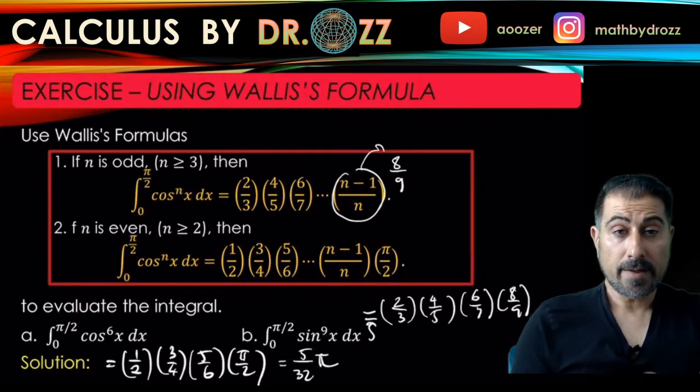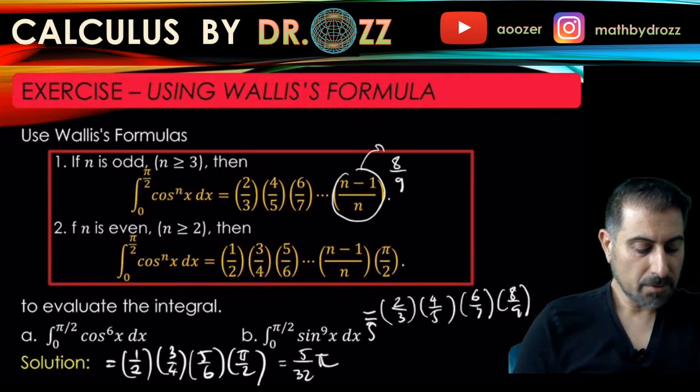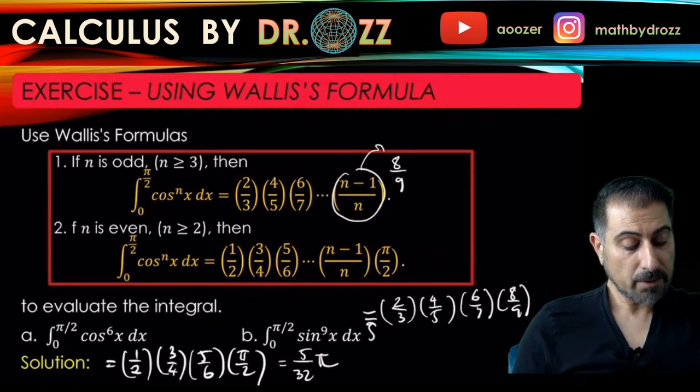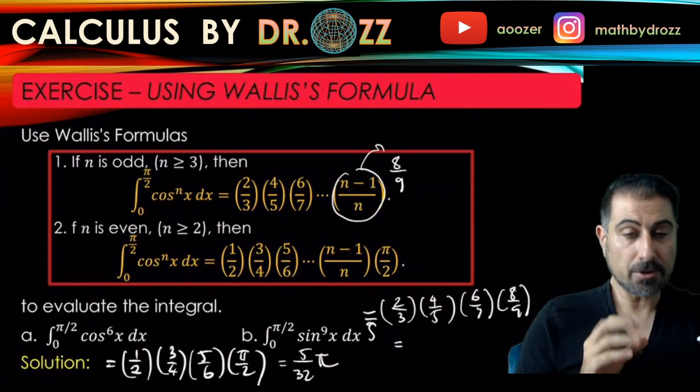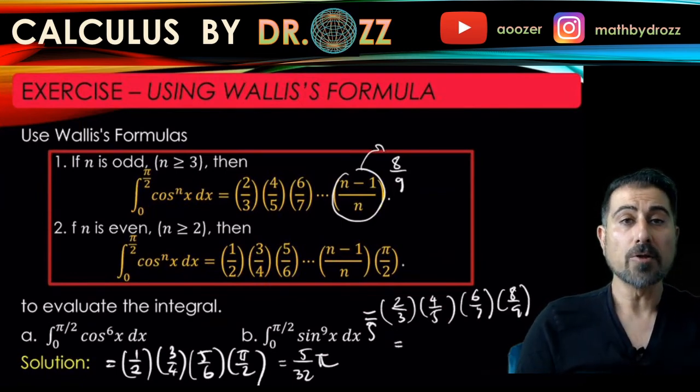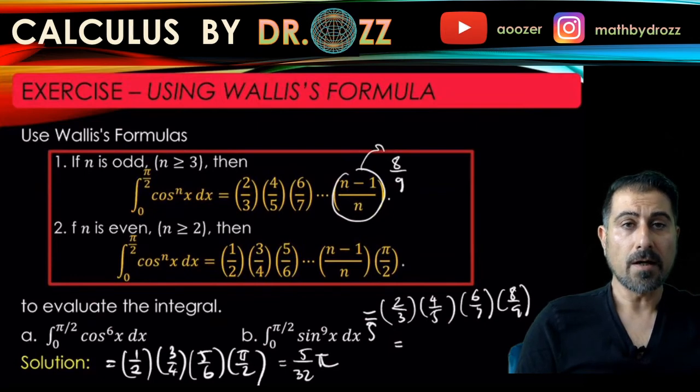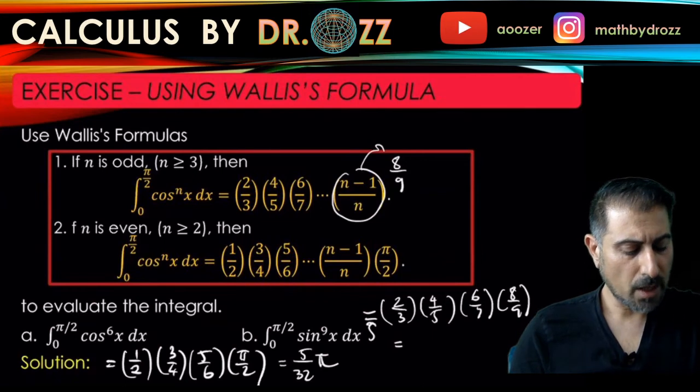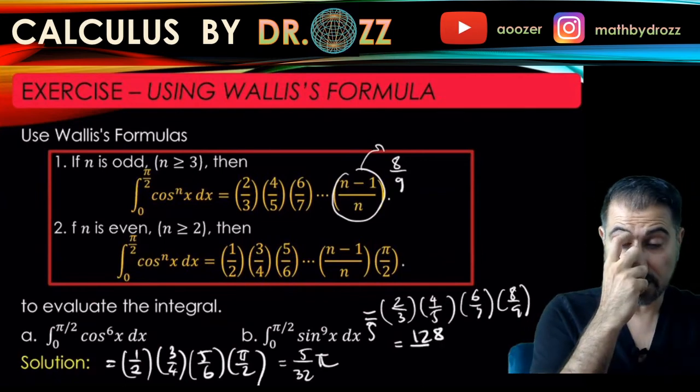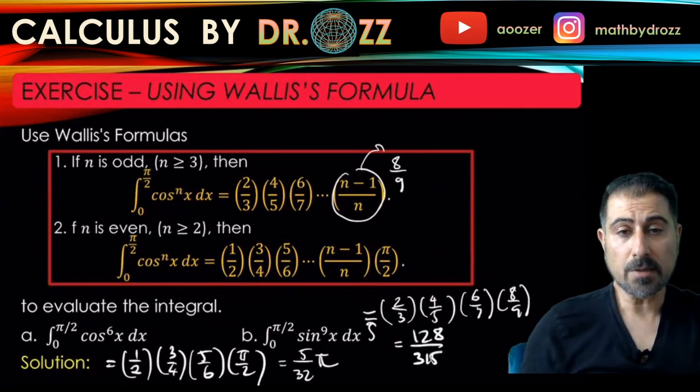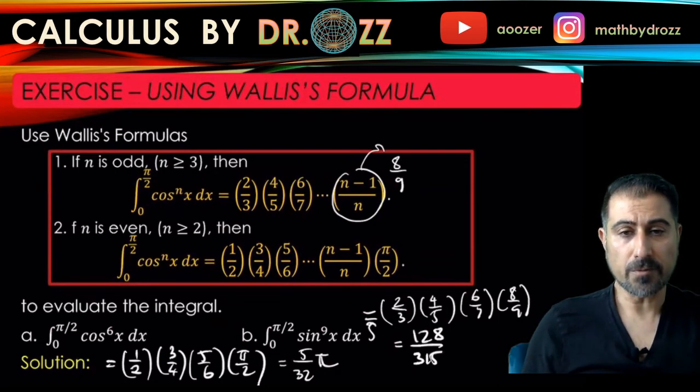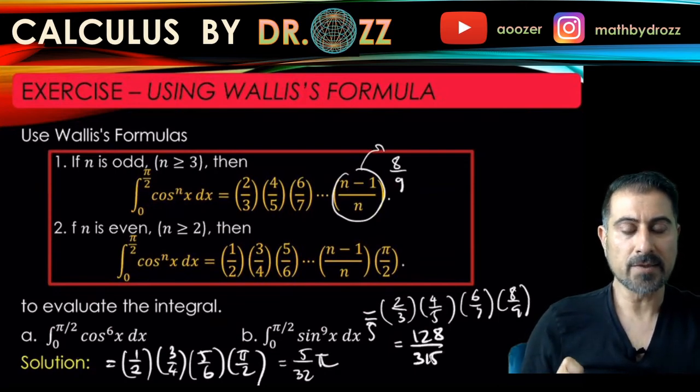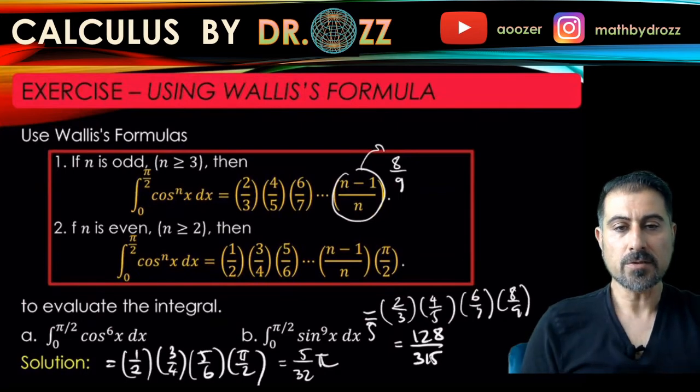And you can go ahead and simplify this. Well, I would not recommend you to use the calculator to have the final ratio, but first get the ratio by multiplying these fractions, and then you should be able to get 128 over 315. And if you want to, you can get a decimal number by using your calculator for this value. But at this moment, you just leave it as the exact expression. It's 128 over 315. All right, so this was a short video.